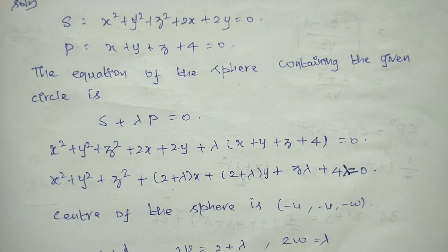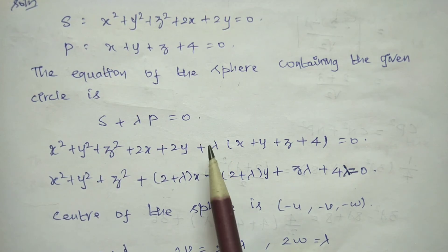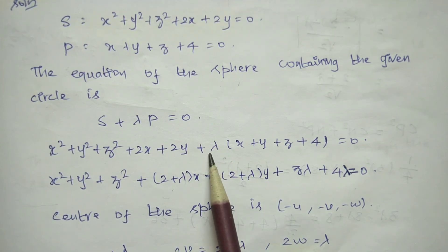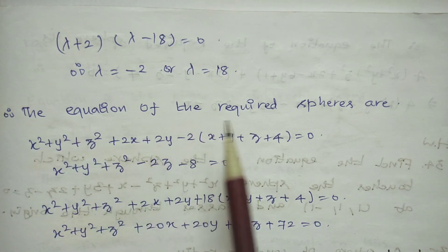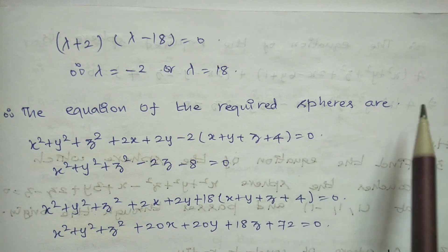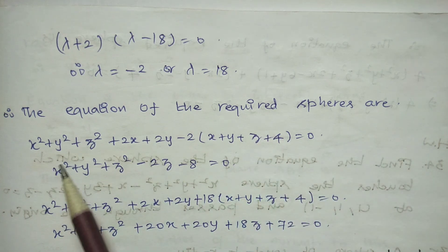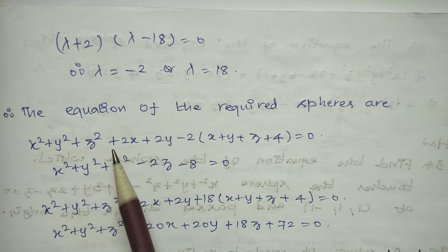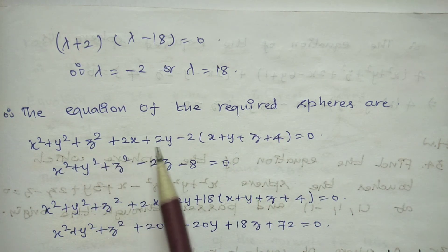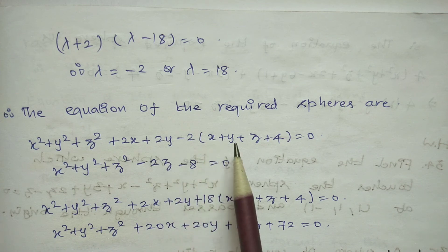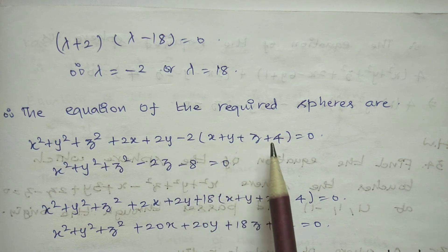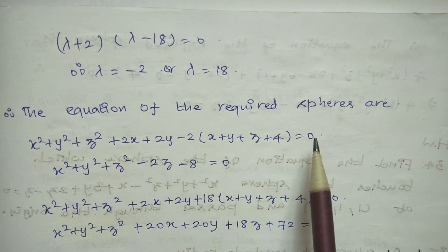We have two lambda values. Substituting λ = −2 into S + λP = 0 gives the first sphere equation: x² + y² + z² + 2x + 2y − 2(x + y + z + 4) = 0.